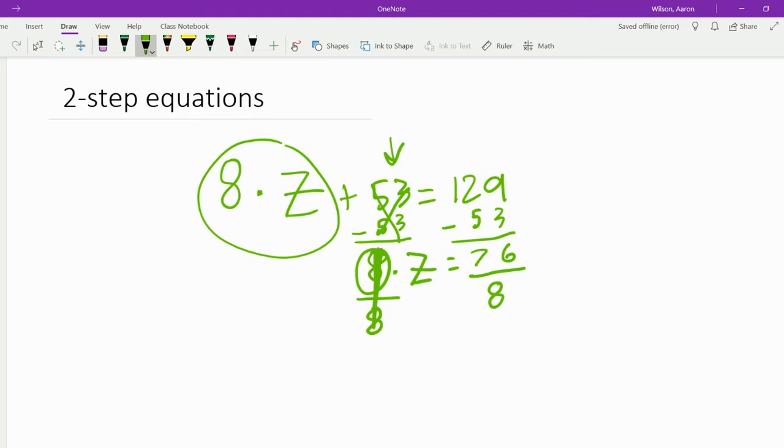But 8 over 8 is simply just 1. There's a big 1 in between, which means 1 times z is z, so we're just going to put z down here, and z will equal what we get with 76 by 8.